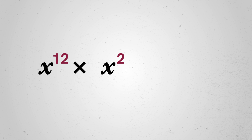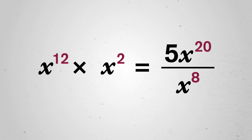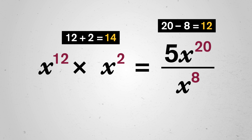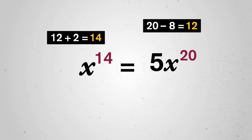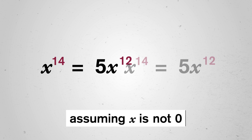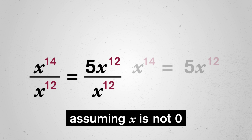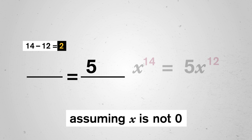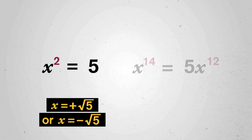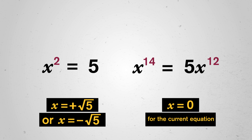So if you're asked to handle something like x to the twelfth times x squared equals 5 times x to the twentieth all over x to the eighth, think about how multiplication and division turn into addition and subtraction. 12 plus 2 is 14. 20 minus 8 is 12. That gives us x to the 14th equals 5x to the 12th. Either we can divide both sides by x to the 12th — 14 minus 12 is 2 — so now we have x squared equals 5. Or x equals zero. We can actually solve this equation.